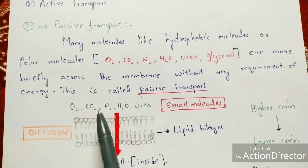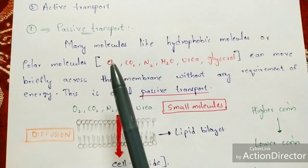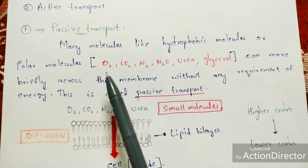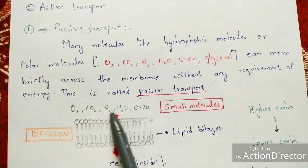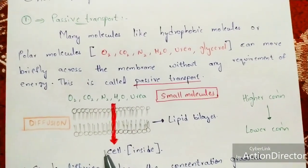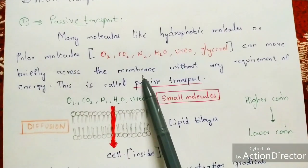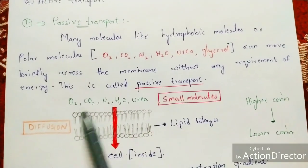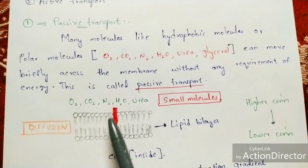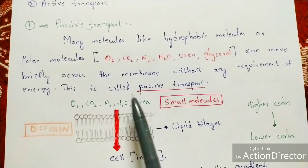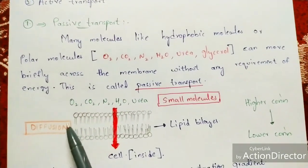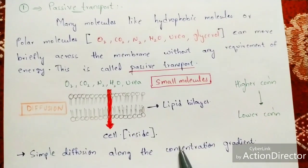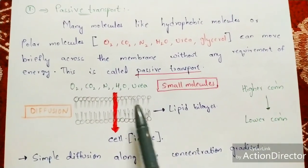Looking at the diagram of the lipid bilayer: these small molecules — hydrophobic or polar molecules — can move across the membrane from the outer environment to the inner environment by a process called diffusion. No energy, meaning no ATP molecules, is required. This transport follows the concentration gradient — that is, molecules move from higher concentration to lower concentration by simple diffusion.